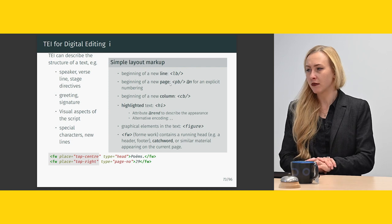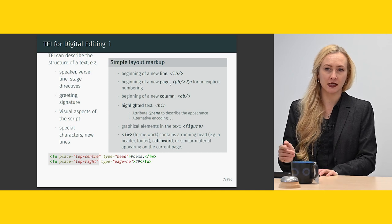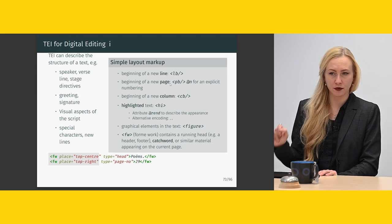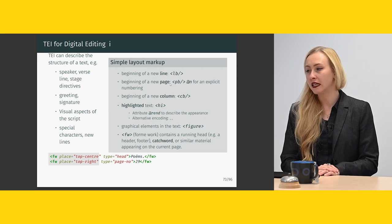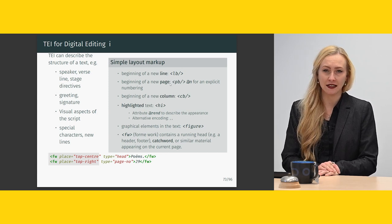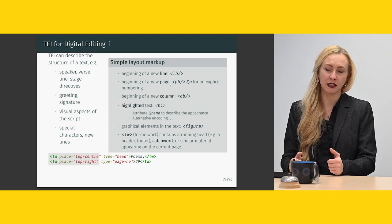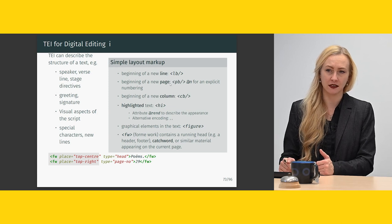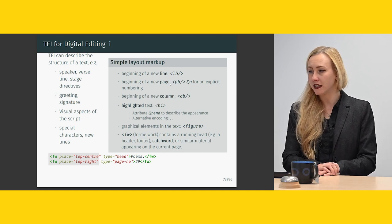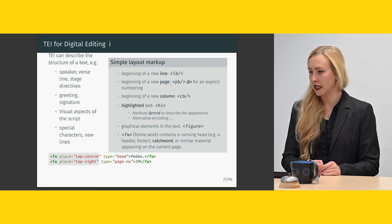Some simple layout markup examples: the beginning of a new line with 'lb' (line beginning), which is a self-closing empty element but sometimes has attributes for references. The beginning of a new page uses 'pb' (page beginning), where you can use the @n attribute — that stands for label — for explicit numbering, since PDF page numbers are not always the same as the manuscript page numbers. There's also 'cb' for column beginning and 'gb' for gathering beginning.